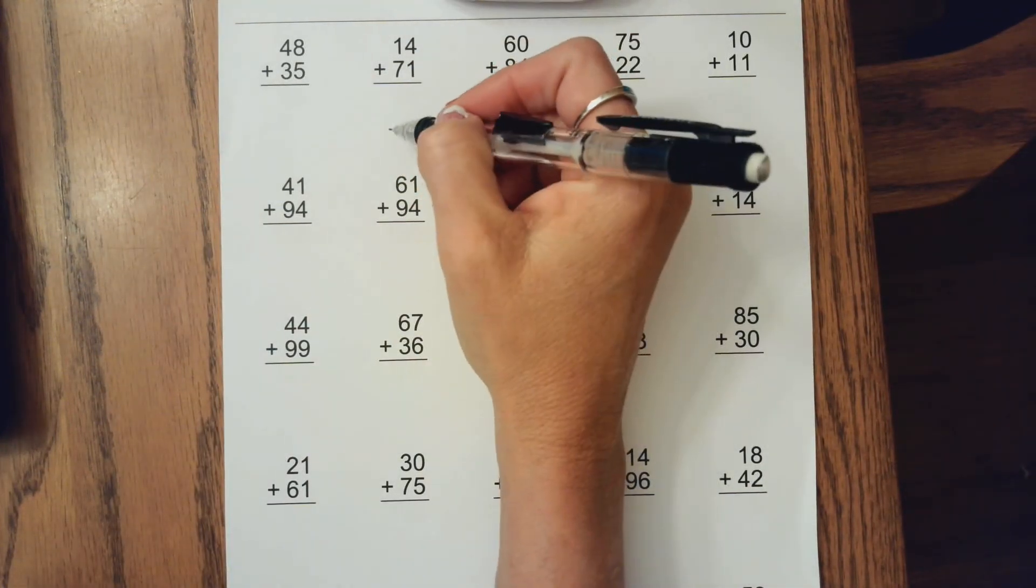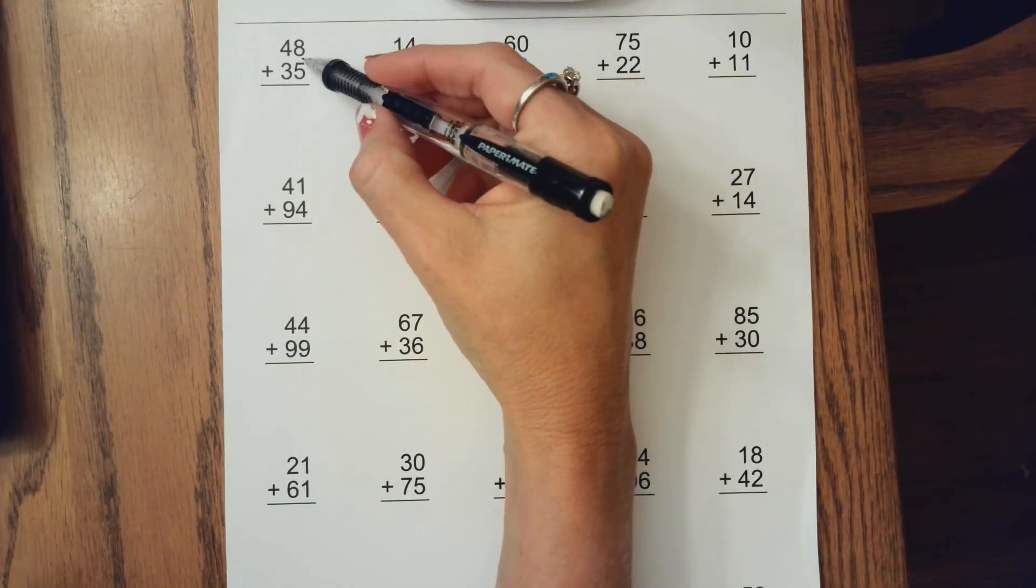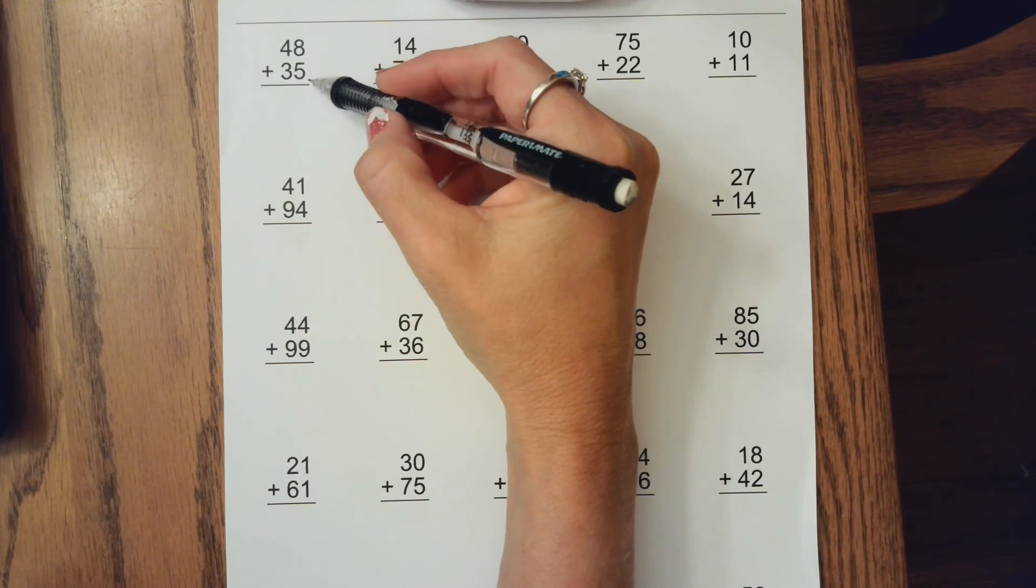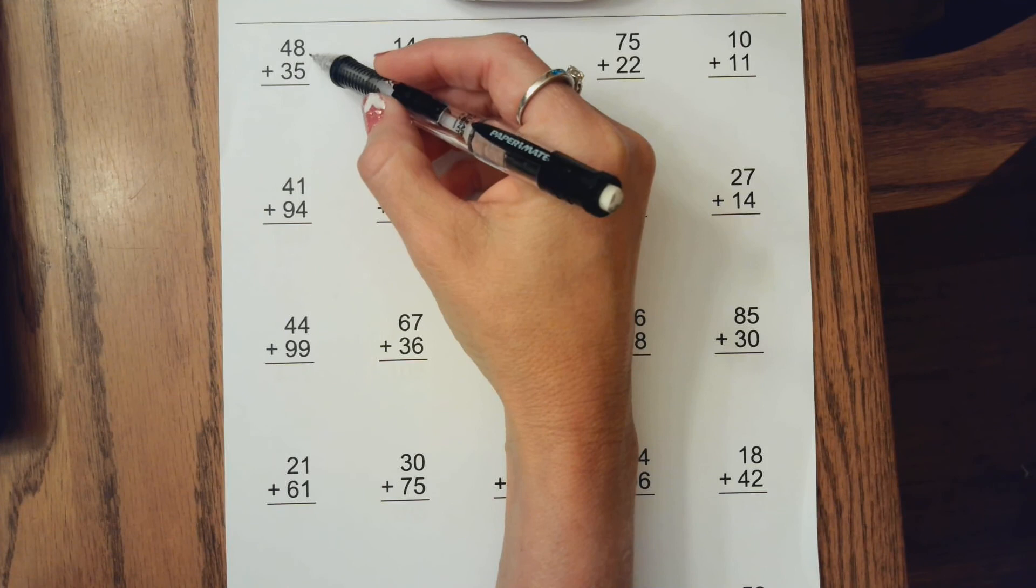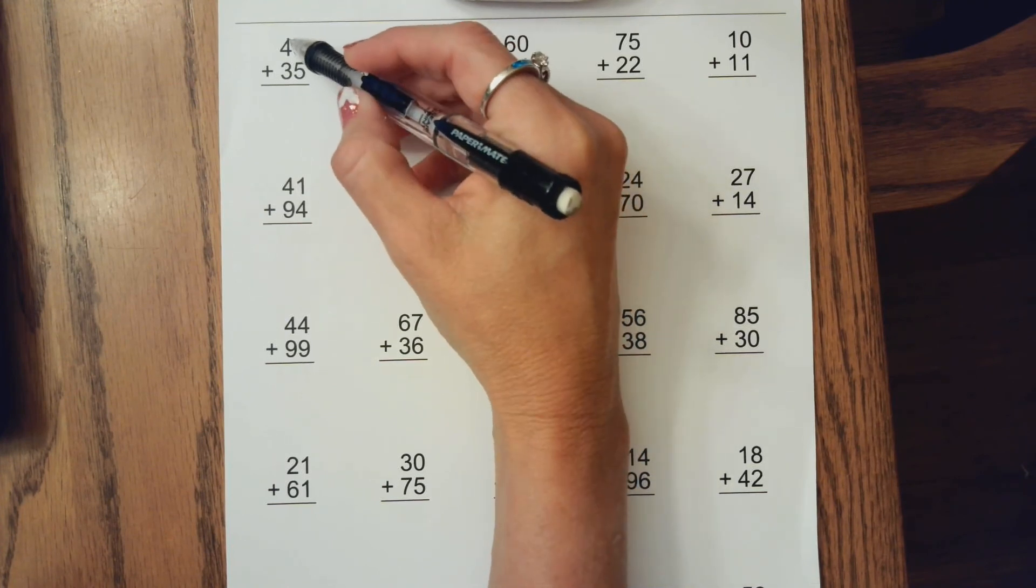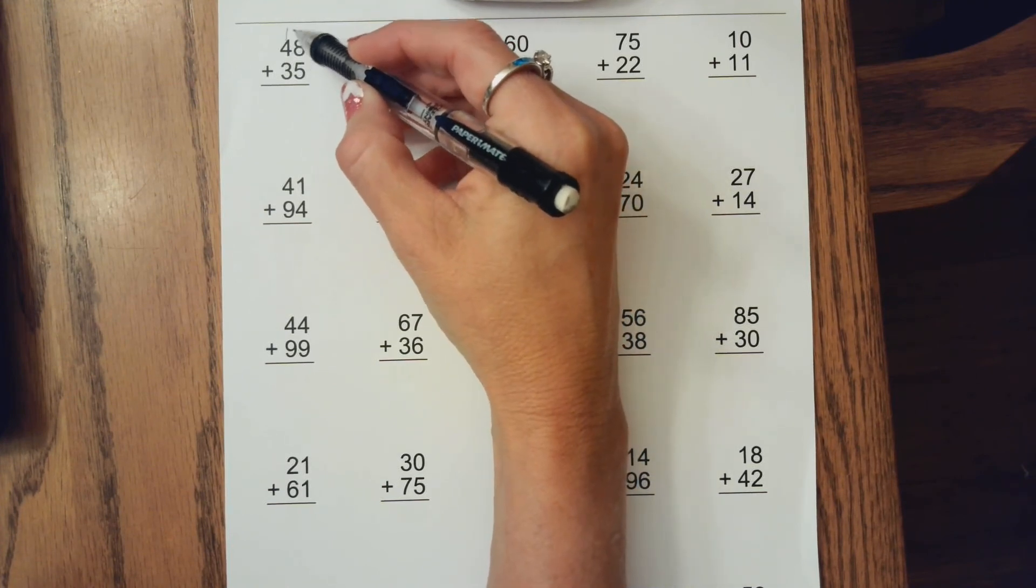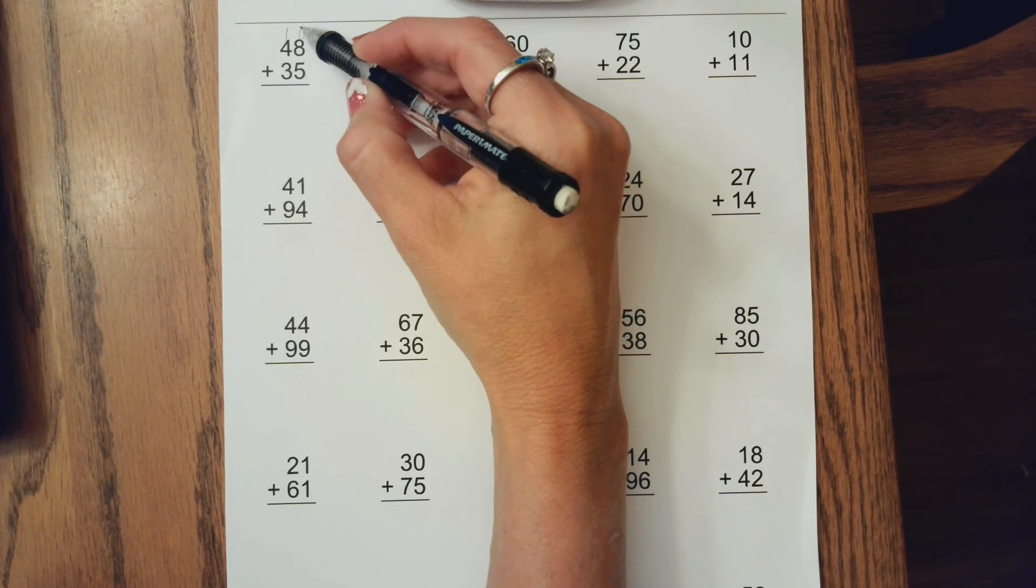I'm going to do a few math problems here. So this first one we have 48 plus 35. If we give 2 to the 8 to make that another 10 here, we know we have 3 left.